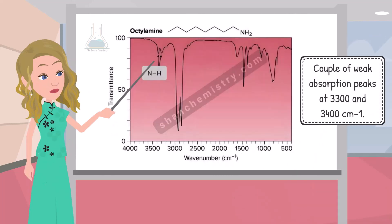An amine like octylamine consists of an NH bond and the NH stretching peaks in the IR spectrum of amines are typically observed as a couple of peaks at 3,300 and 3,400 per cm.